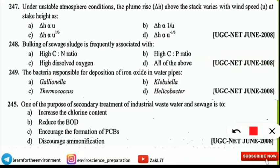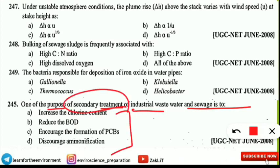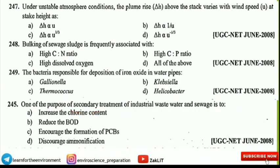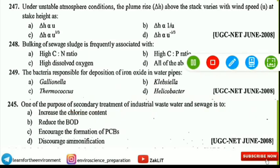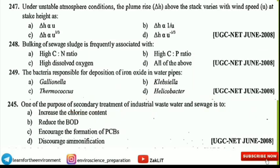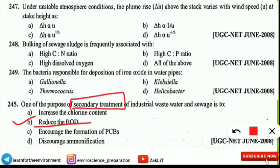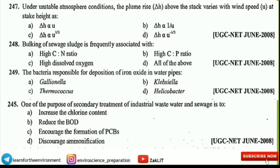The next question is: one of the purposes of secondary treatment of industrial wastewater and sewage is to perform what? This is asking about the secondary treatment process — you should remember primary, secondary, and tertiary processes. The correct option is option B — to reduce the biochemical oxygen demand, or reduce the BOD of the wastewater. Secondary treatment is carried out every time for this purpose.